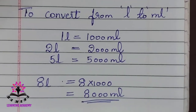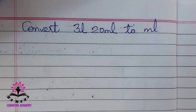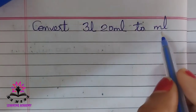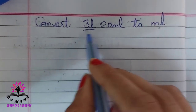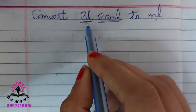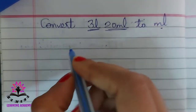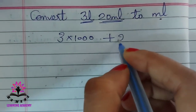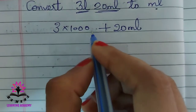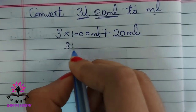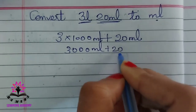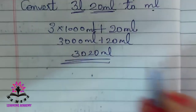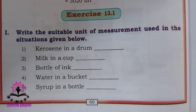Now convert 3 liters 20 milliliters to milliliters. The 3 liters part is converted by multiplying by 1000, and the 20 ml is already in milliliters. So: 3 × 1000 ml + 20 ml = 3000 ml + 20 ml = 3020 ml.